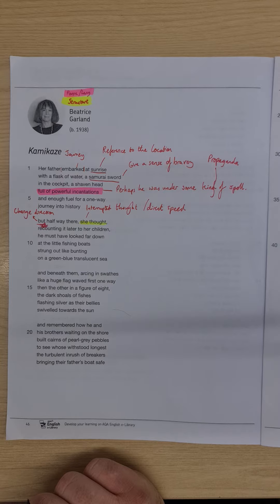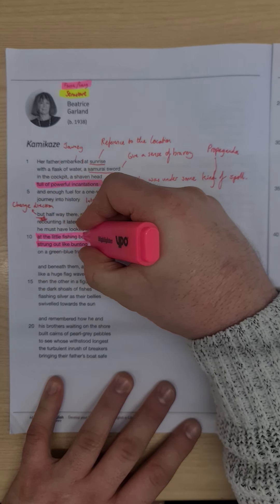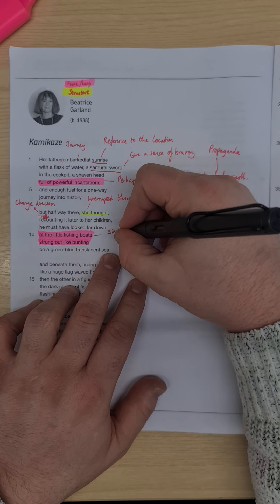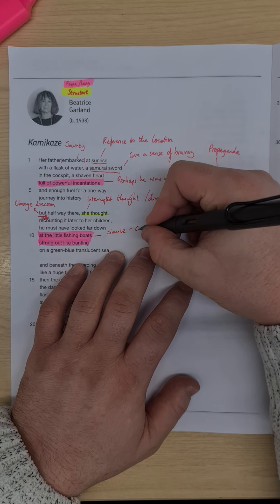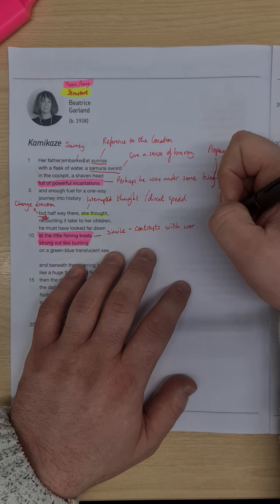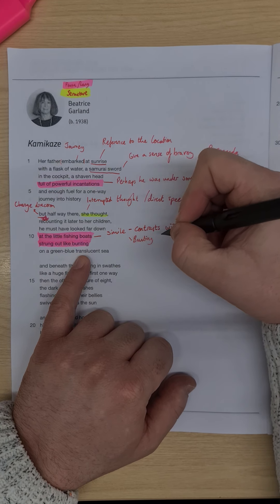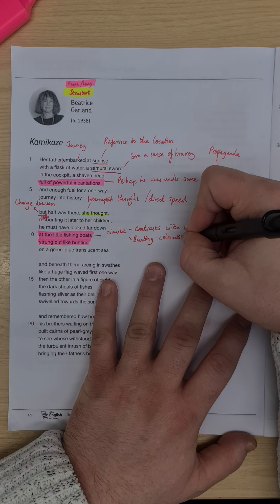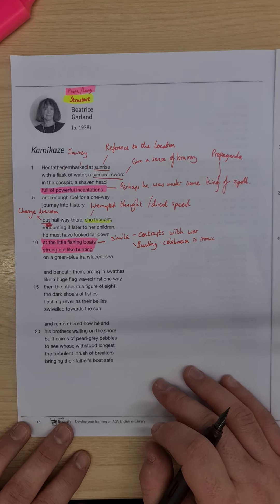He must have looked far down at the little fishing boats, strung out like bunting. And we have a really nice simile here. So this simile, it's homely and pretty. It contrasts with war. The fact that we have bunting as well, we'd normally associate bunting with these celebratory returns. And the celebration idea is ironic, because when he does return home, he is hugely dishonoured. The family disown him. They don't want anything to do with him.